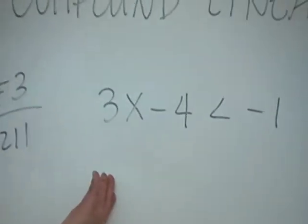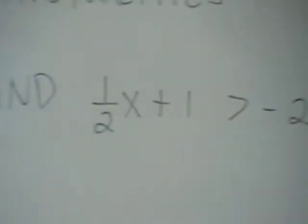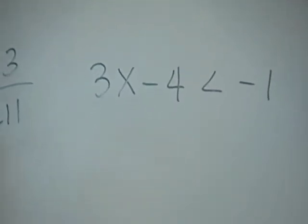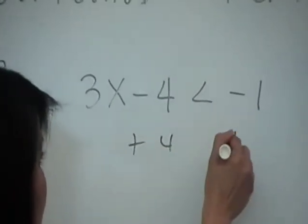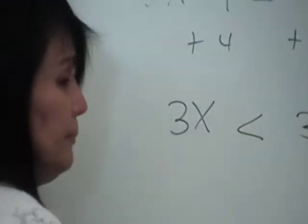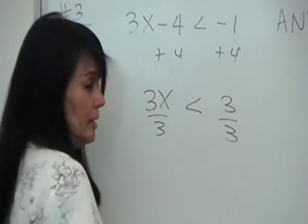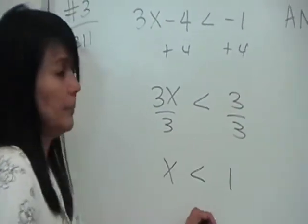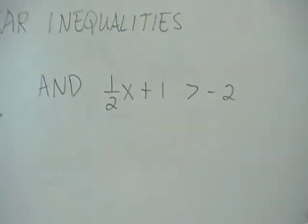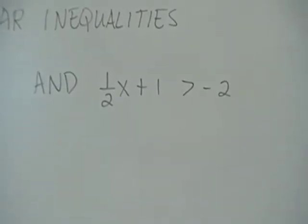Once you know what to do, you just look at each part. What do we do here? Add 4 to both sides. So we get 3x less than 3, then divide by 3, giving x less than 1. That's one part of the answer. On the other side, we have a fraction — so we kill the fractions by multiplying everybody by 2.